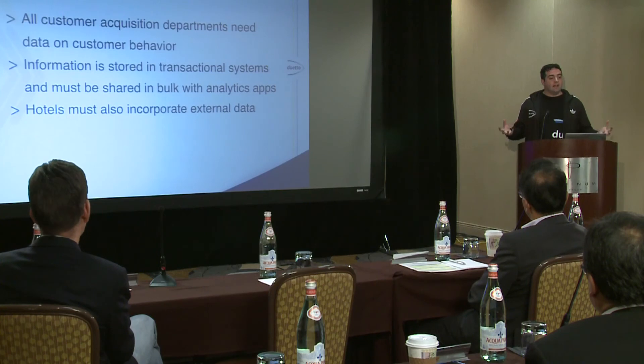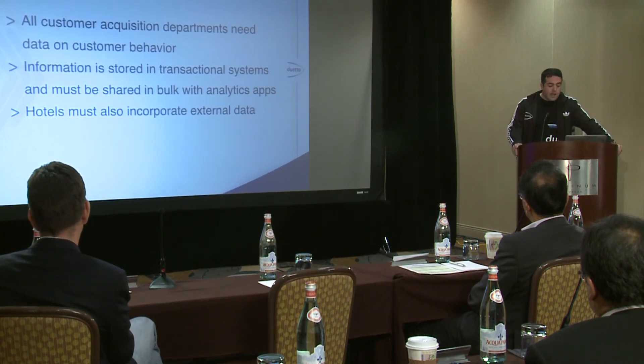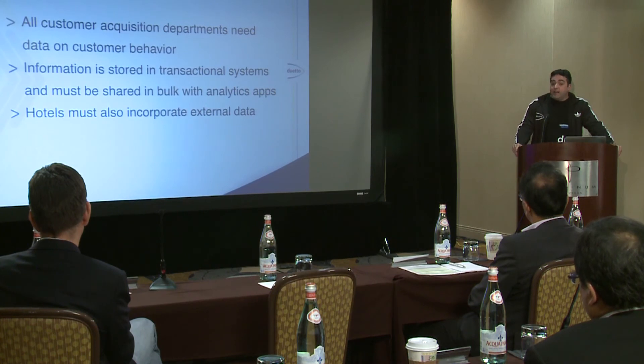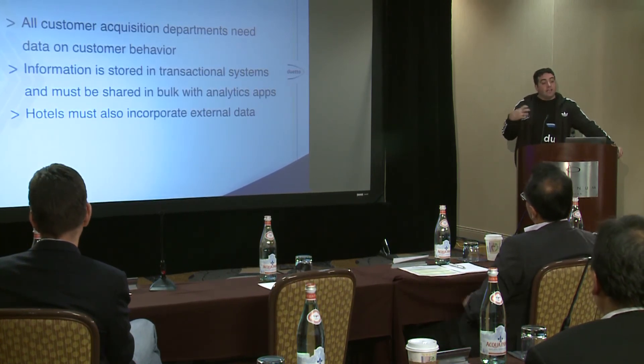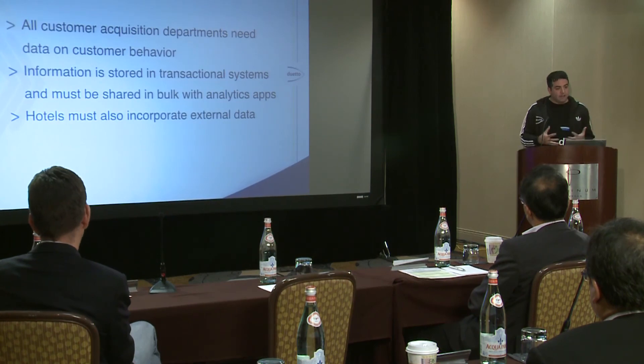This data resides in different transactional systems throughout the operation. They usually don't talk to each other, or if they do, it becomes very costly to have them integrate together. The first thing you need is a single repository where all this data can be linked and shared among all these different departments to make decisions — which is where big data starts. Besides data collected at the property level, there is external data that affects how customers behave that is now readily available and needs to be looked at and integrated with everything else.